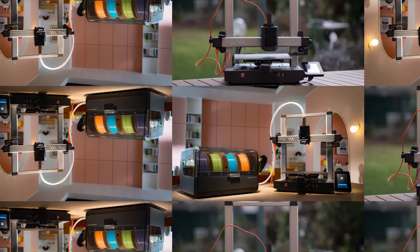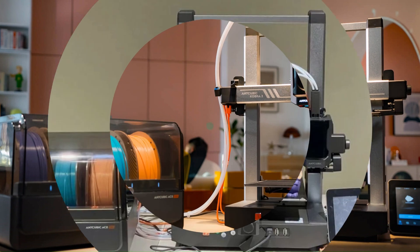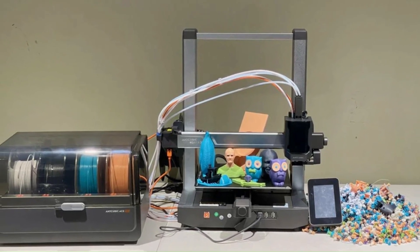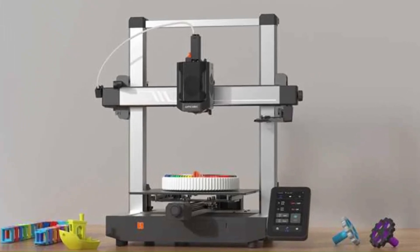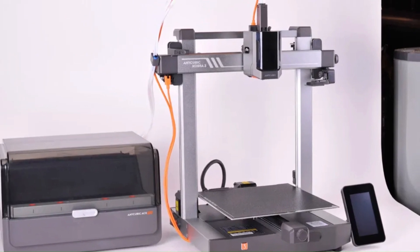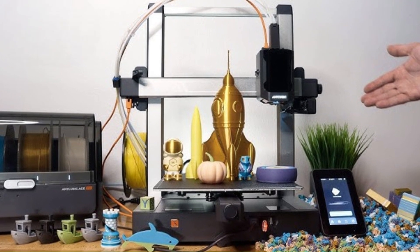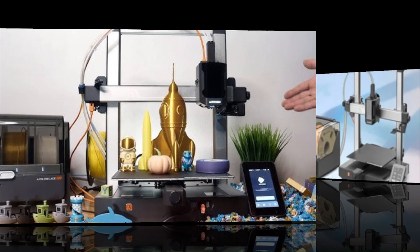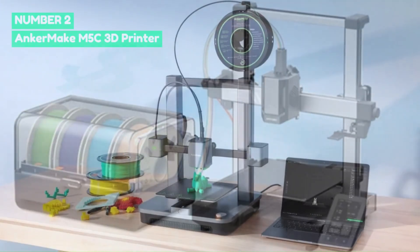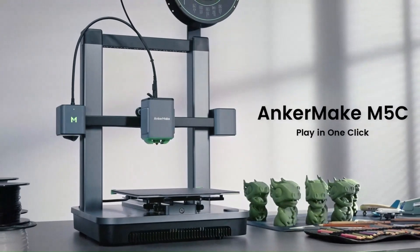However, it has some drawbacks. The filament changer can be slow when performing swaps, increasing print times. Noise levels are also higher than some competitors, which may be a concern for home users. Additionally, the software is still evolving, lacking some advanced filament management features. Overall, the Cobra 3 Combo is a great choice for users looking for affordable multicolor printing with a strong feature set and ease of use.